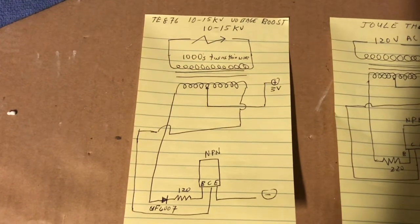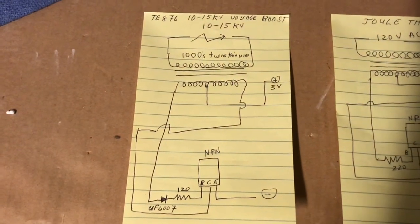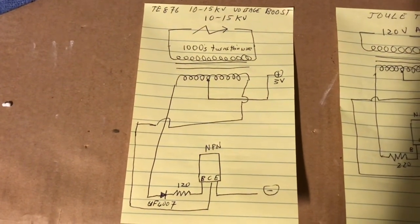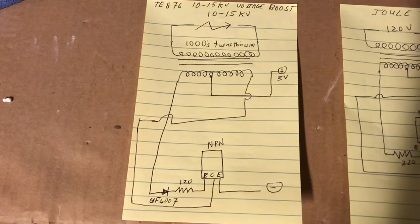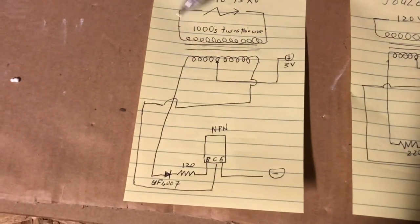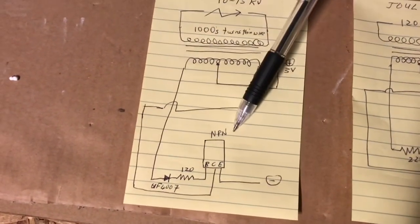So here's this TE876 high voltage booster putting out 10 to 15 kilovolts starting with 3 volts right here at your NPN transistor.